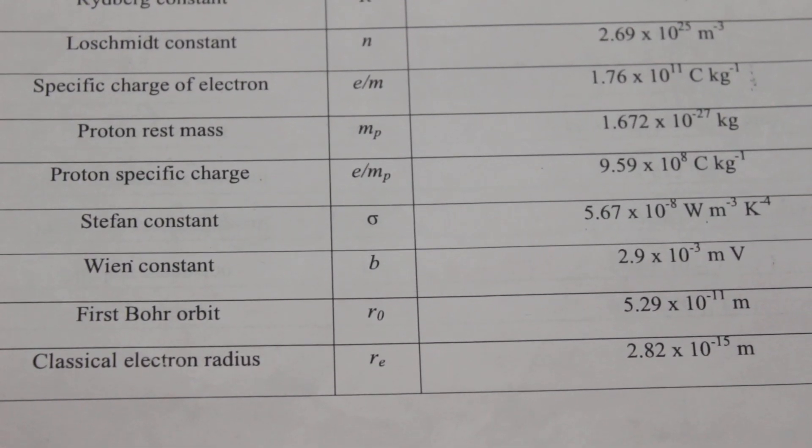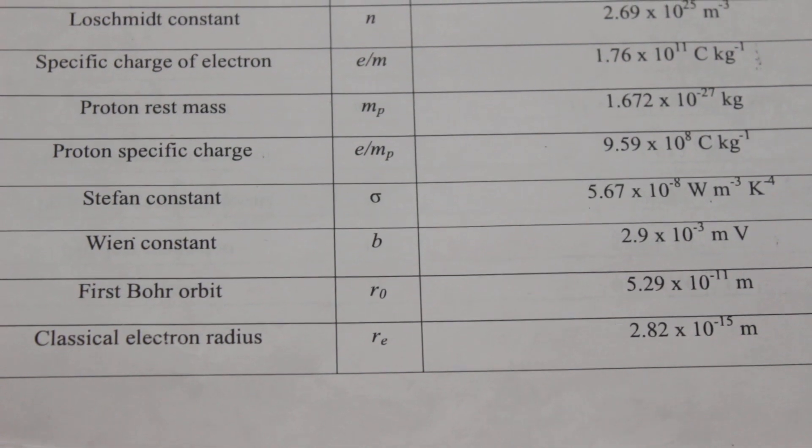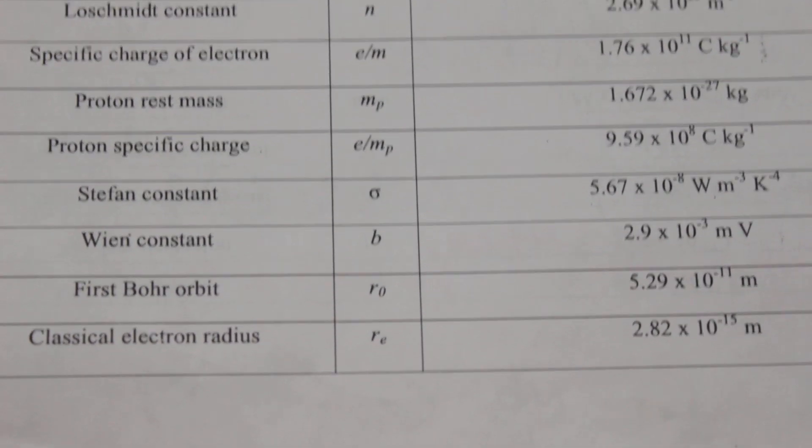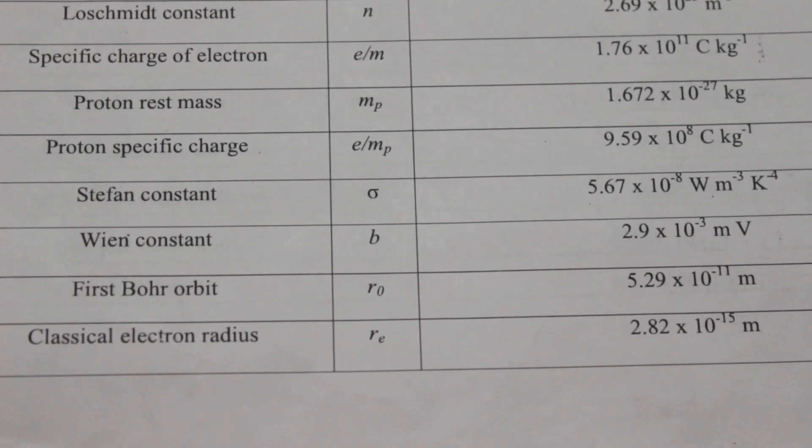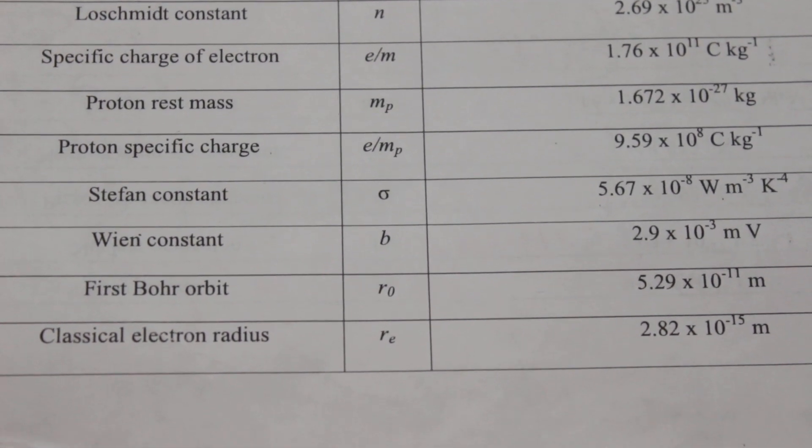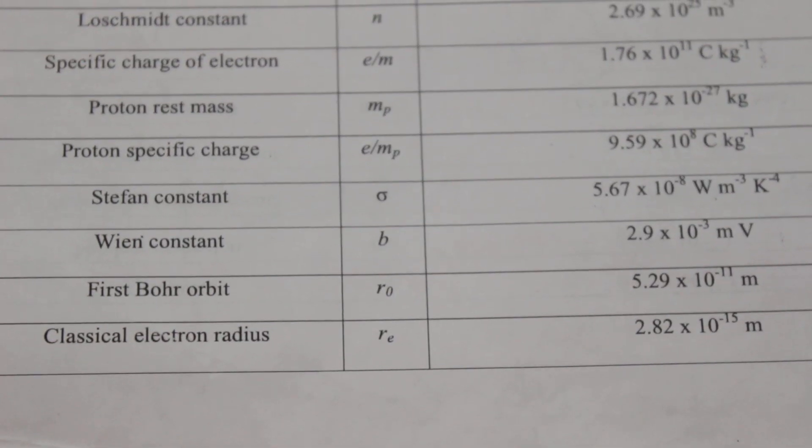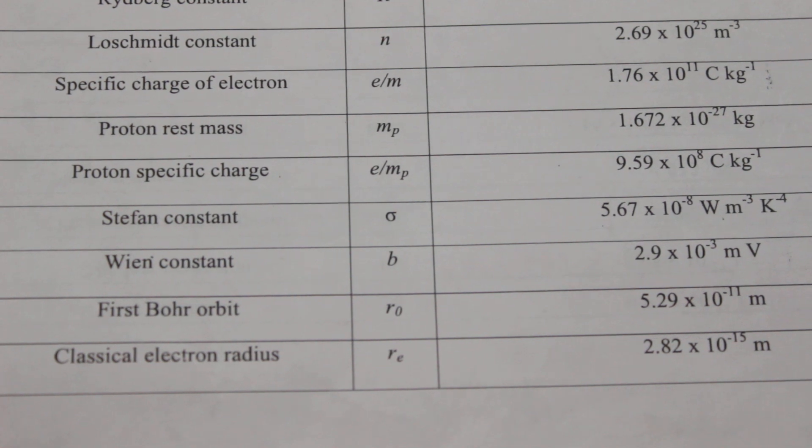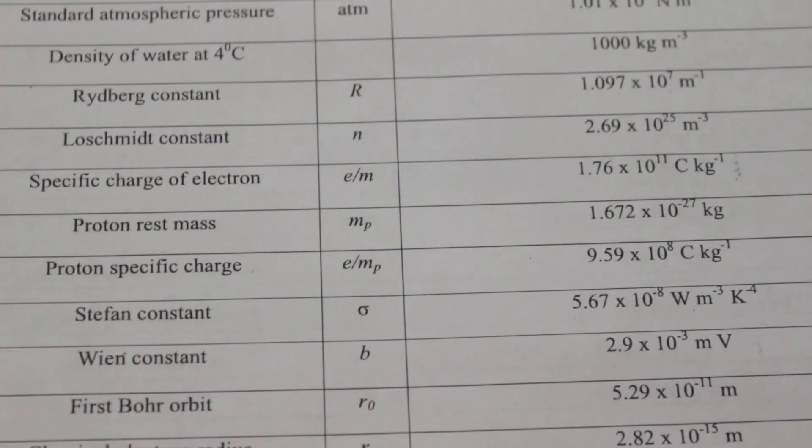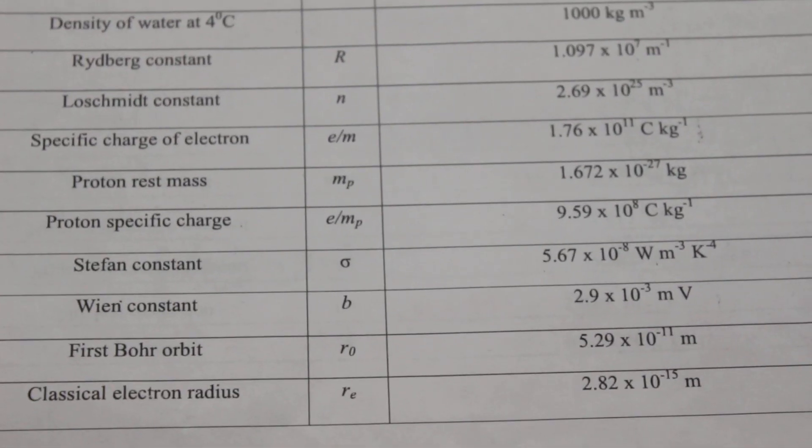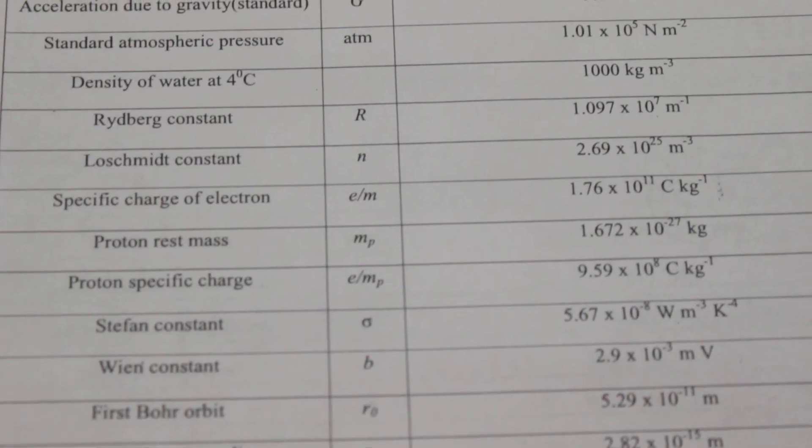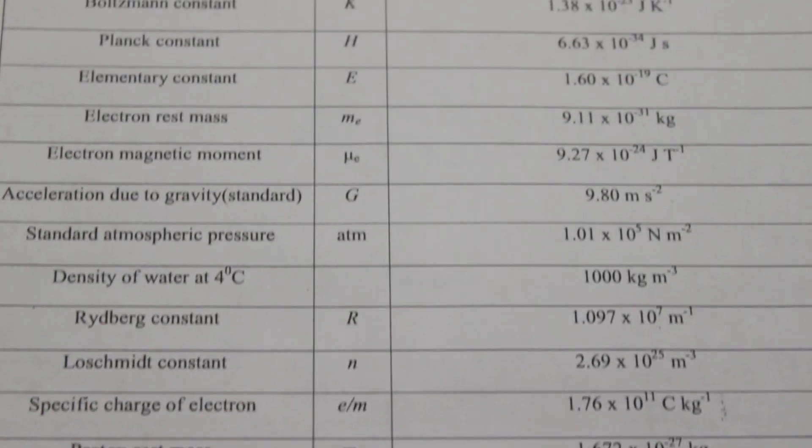Wien's constant, 2.9 times 10 to the power minus 3. The radius of first Bohr orbit r0, that is 5.29 times 10 to the power minus 11 meters or 0.529 angstrom. Classical electron radius r subscript e, that is 2.82 times 10 to the power minus 15 meters.